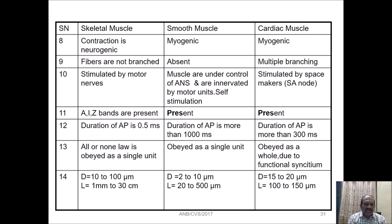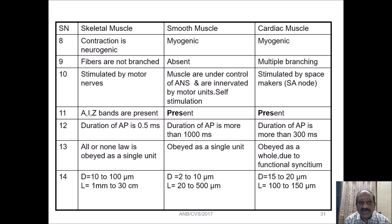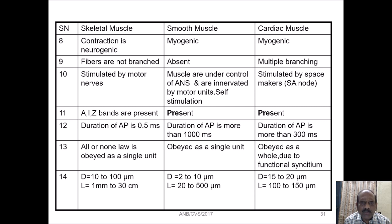In skeletal muscle, contraction is neurogenic — under nervous system control. In smooth muscle and cardiac muscle, contractions are myogenic, meaning the muscle can generate its own impulses, producing excitation followed by contraction. In skeletal muscle, fibers are not branched. In smooth muscle branching is absent, but in cardiac muscle fibers are diffusely branched with multiple branching. Skeletal muscles are stimulated by motor neurons; smooth muscle is under the autonomic nervous system.